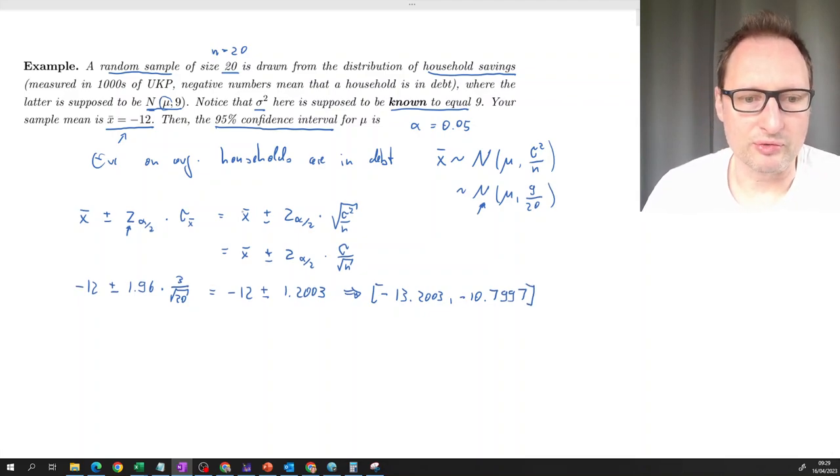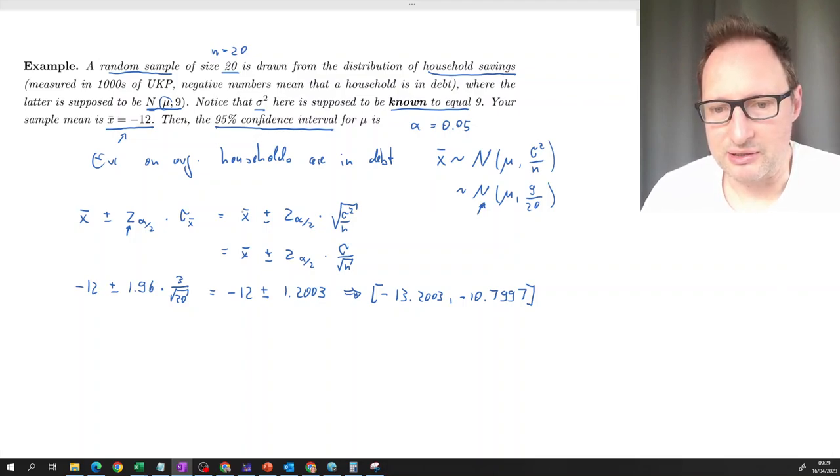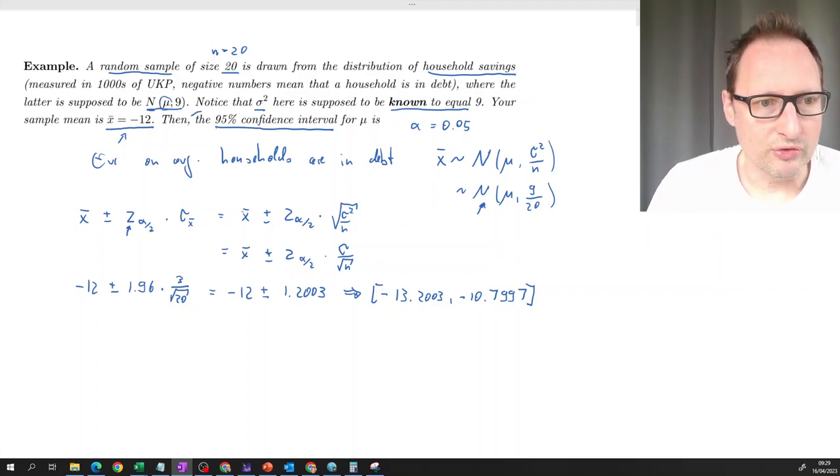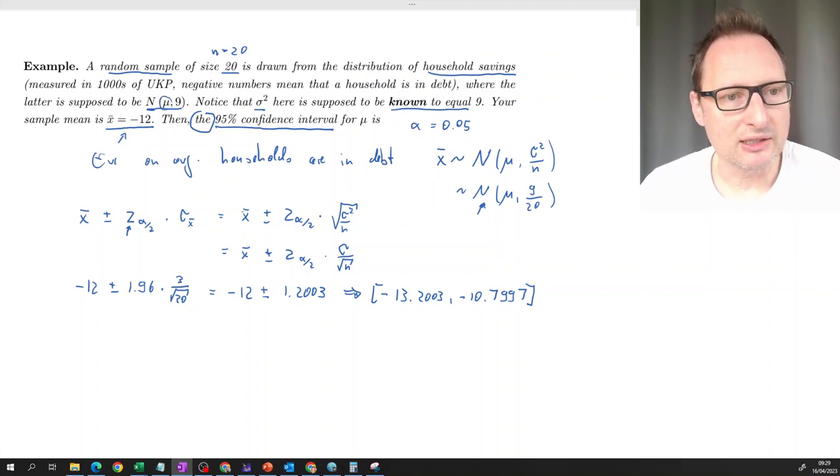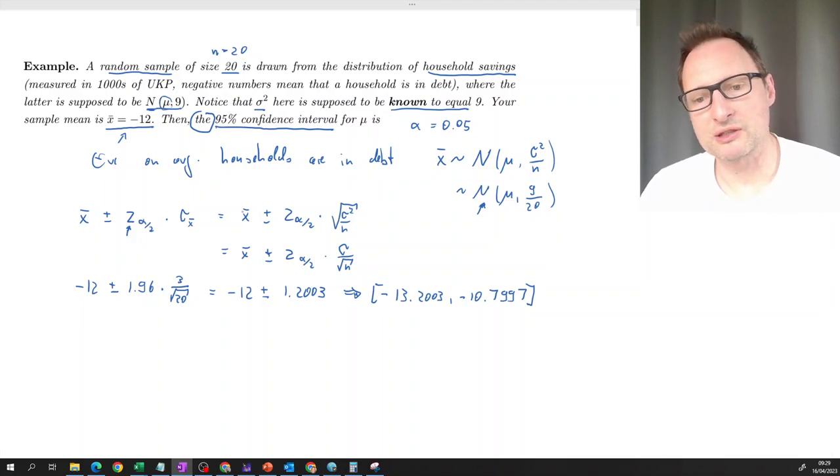Depending on how you run, if you calculate with more numbers behind, you may get a different number at the end here. So that's our interval. So how do we interpret this interval? So we call this, usually, although we should really say this is a 95% confidence interval for mu, the unknown population mean.